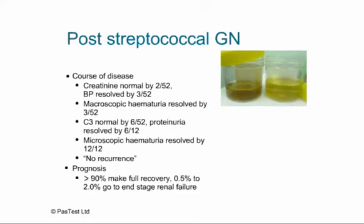The course of the disease: creatinine, if abnormal, is usually normal by a fortnight; hypertension resolves by three weeks; macroscopic haematuria similarly improves by three weeks; C3 becomes normal by six weeks. Proteinuria can take up to six months to resolve, and microscopic haematuria can last up to 12 months. Importantly, we don't see disease recurrence in post-streptococcal GN — recurrent presentations suggest another form of glomerulonephritis. Prognosis is very good: over 90% make a full recovery, and only 0.5–2% progress to end-stage renal failure.